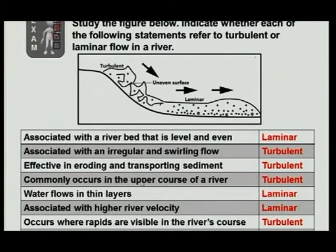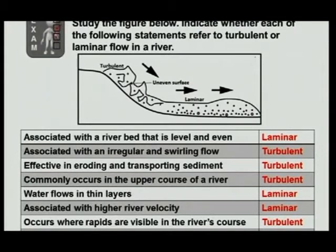Commonly occurs in the upper course of the river — we're coming back to the upper course, just hang on — that would be turbulent. The water flows in thin layers — remember the video clip we showed you — that is laminar. Associated with higher river velocity — that would also be laminar. Occurs where rapids are visible in the river's course — of course, that will be turbulent.